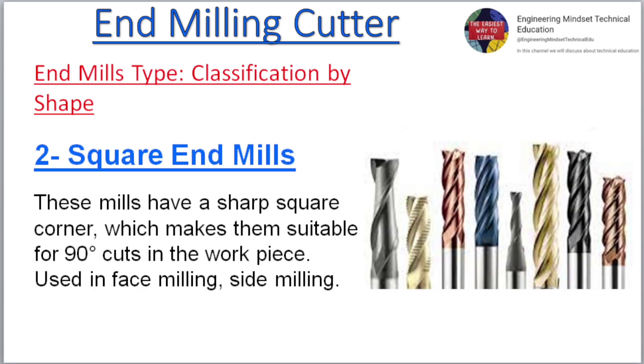2. Square end mills: These mills have a sharp square corner, which makes them suitable for 90-degree cuts in the workpiece. Used in face milling and side milling.